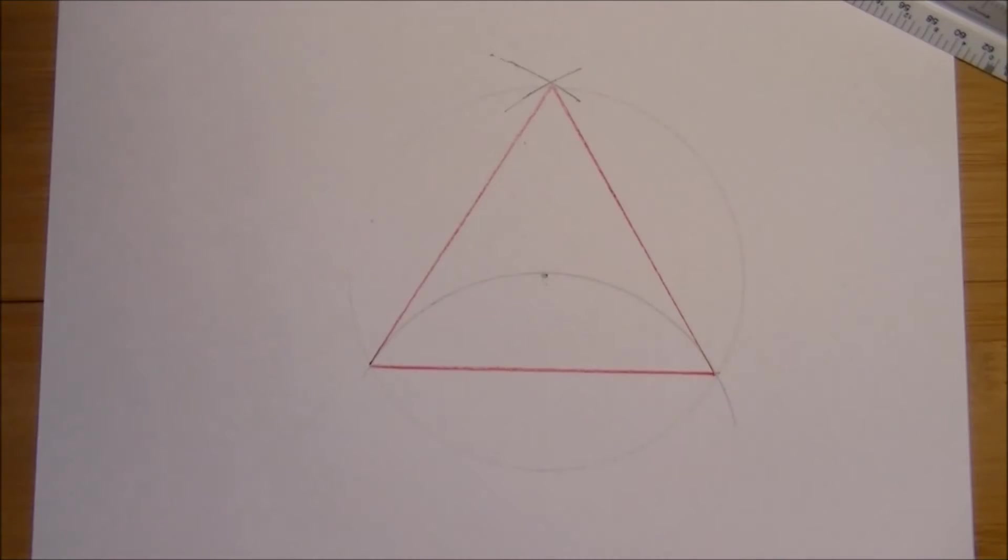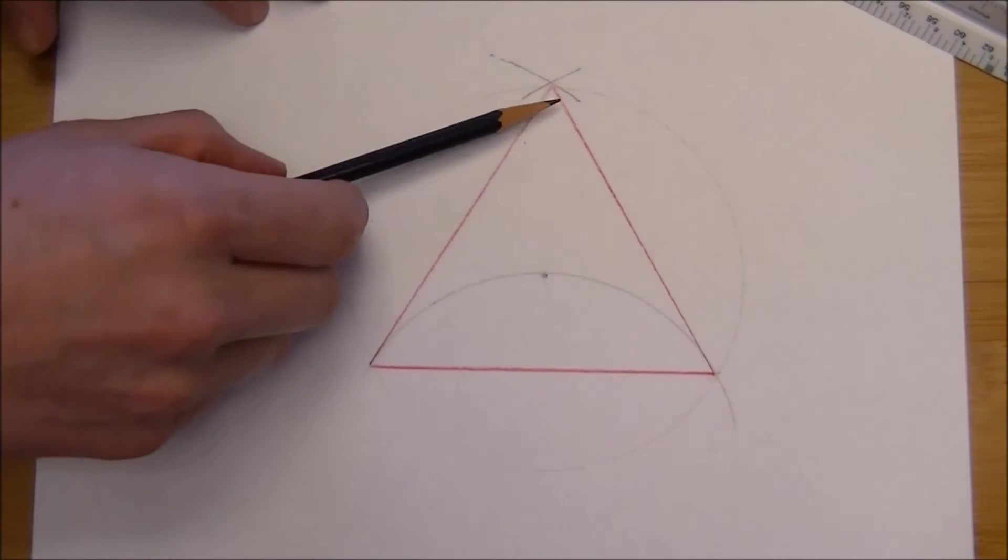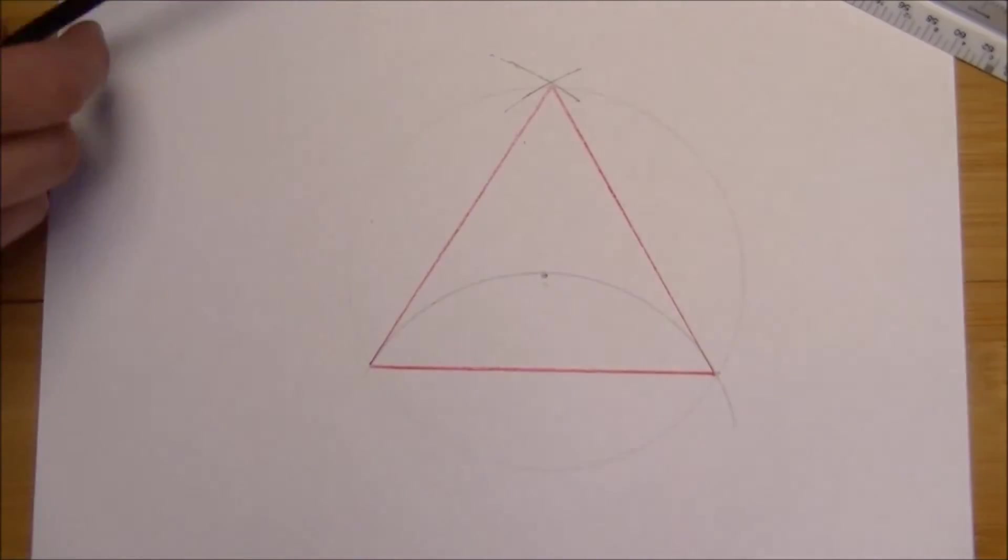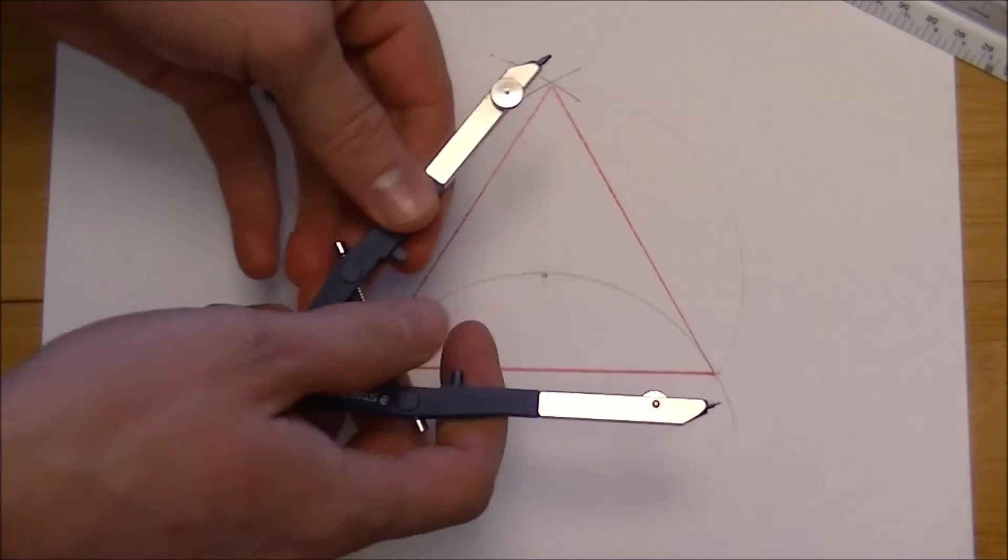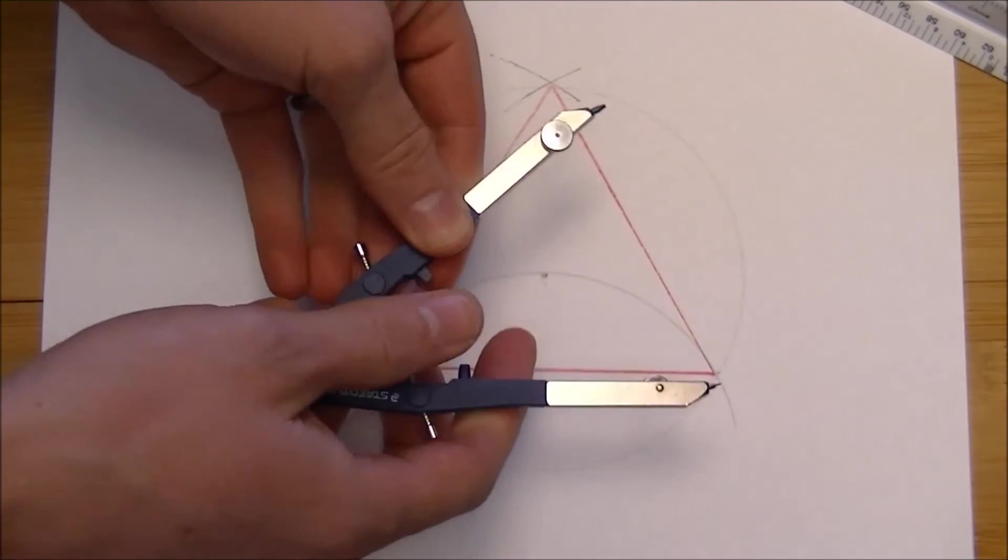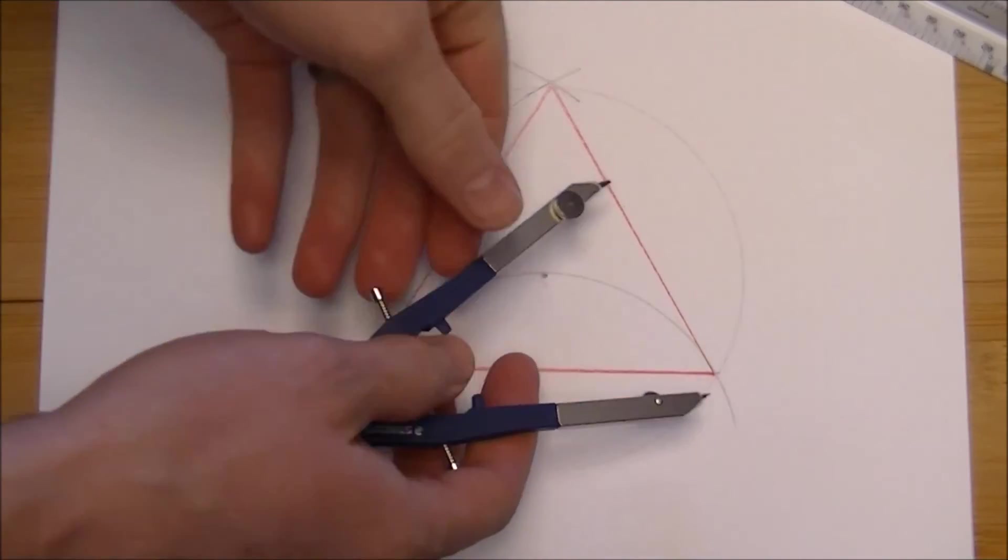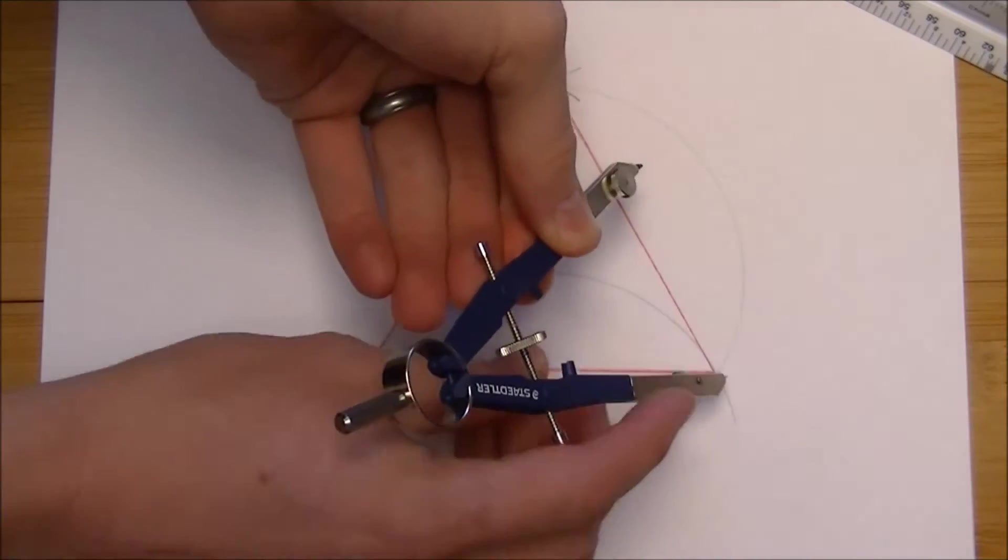Now, to make a hexagon, what we're going to do is we're going to take this line here, one of the sides of the triangle, doesn't matter which one, and we're going to bisect that line. And by doing that, we'll be able to create, out of a three-sided figure, a six-sided figure.